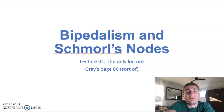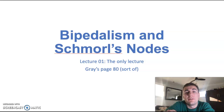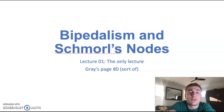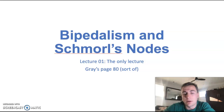Hey guys, and welcome to part one of this one-part lecture series on bipedalism and Schmorl's nodes. Today we're going to be taking a look at how the evolution of humans into bipedalism led to several spinal problems, one of which being Schmorl's nodes. Schmorl's nodes, if you're unfamiliar, are a type of disc herniation. If you remember back to our first lecture series on the back — specifically back video 04 — we talked about how herniations can occur in the spine and what doctors will do to treat them. This is a different type of disc herniation, but feel free to review that video for background. Let's go ahead and get right into it.